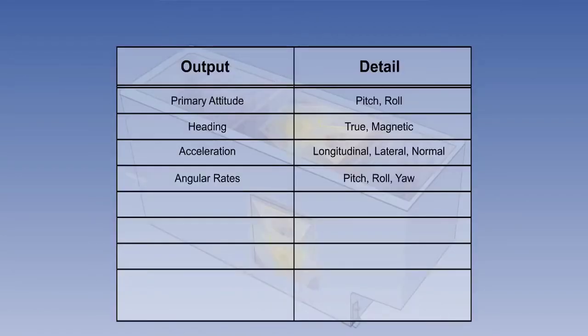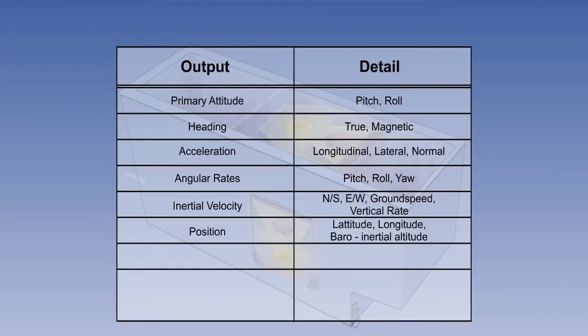The IRS gives angular rates of pitch, roll and yaw, just as the INS did. And it gives inertial velocities north-south, east-west and ground speed, as the INS did. However, it also gives baro-inertial vertical rate. The IRS gives latitude and longitude position information, as the INS did. But it also gives a baro-inertial altitude. It gives wind speed, wind direction and drift, as the INS did.